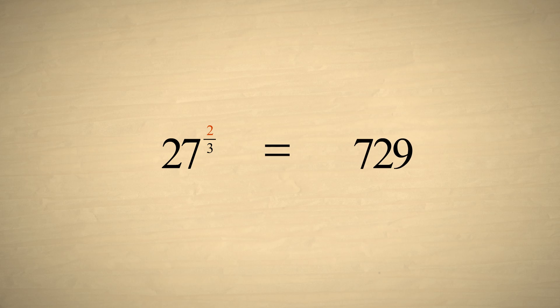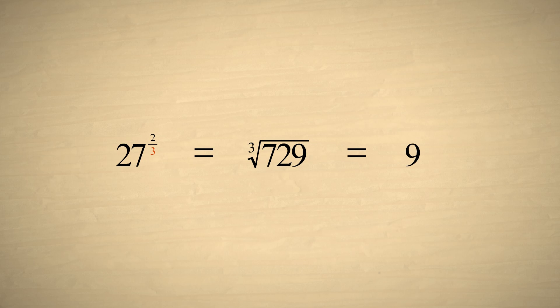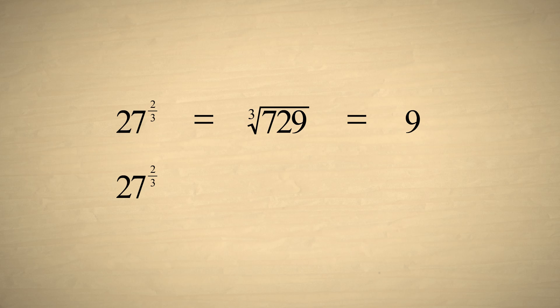If we square twenty-seven first, we get seven hundred twenty-nine. Then taking the cube root of seven hundred twenty-nine gives us nine. On the other hand, if we take the cube root first, we get three. And squaring three gives us nine. Either way, we get nine. However, the second way is a lot easier.